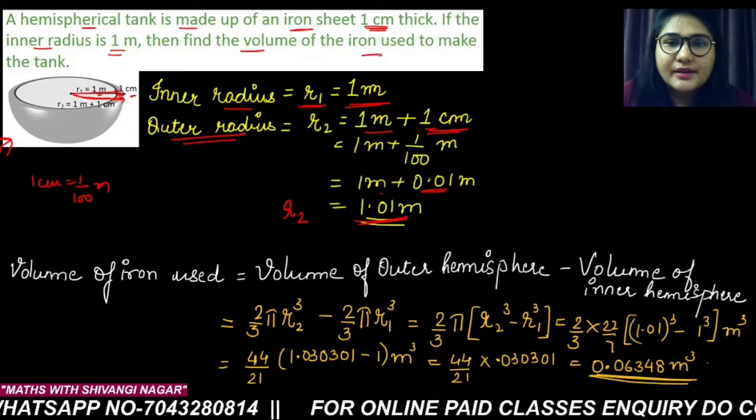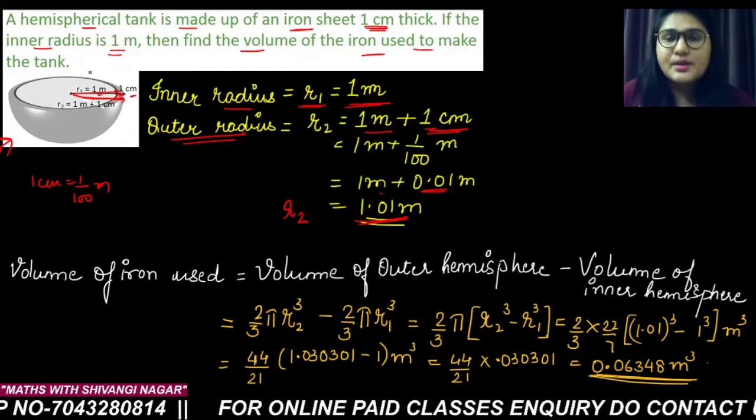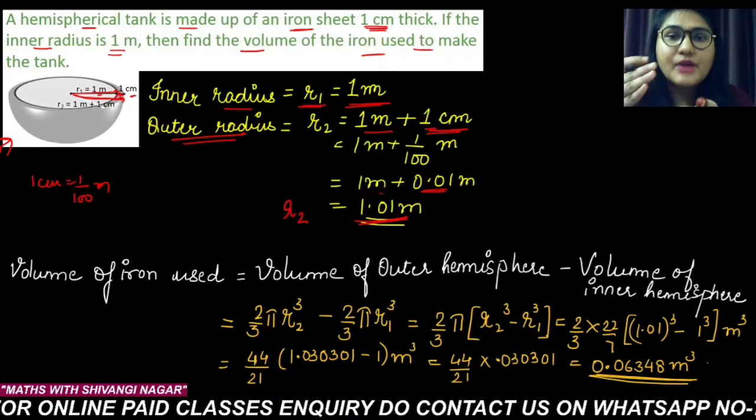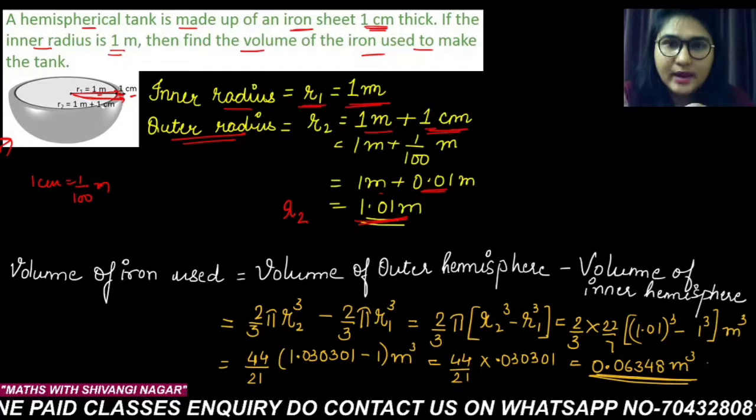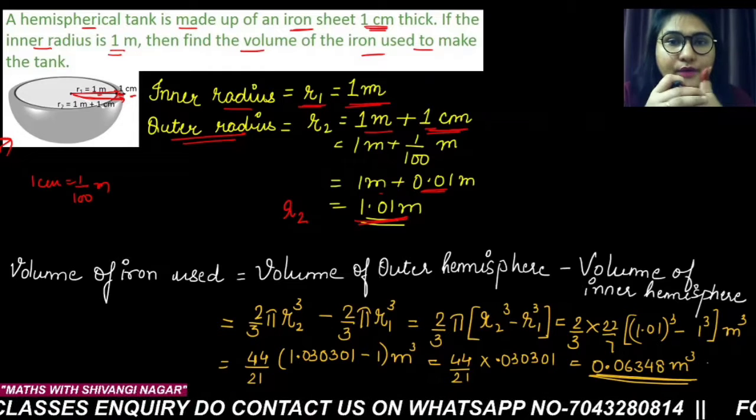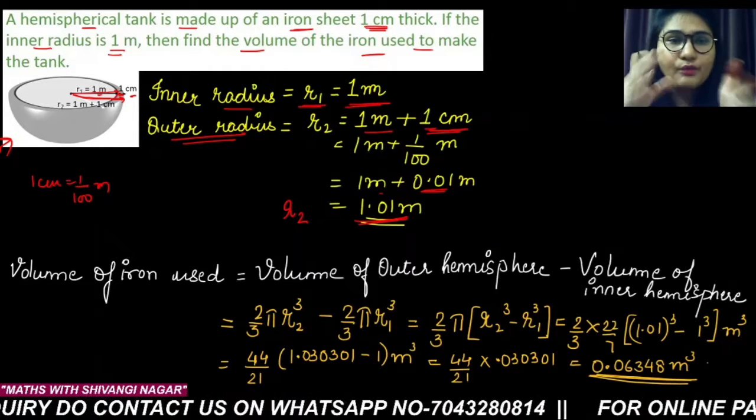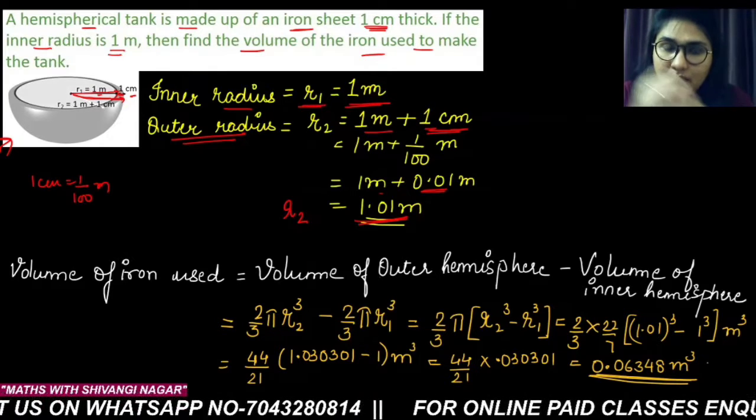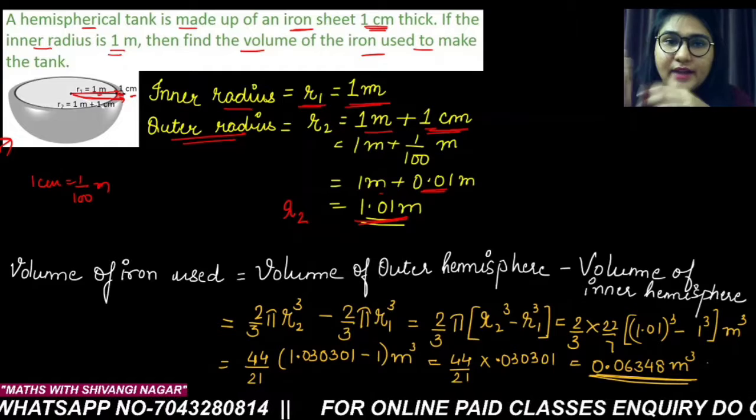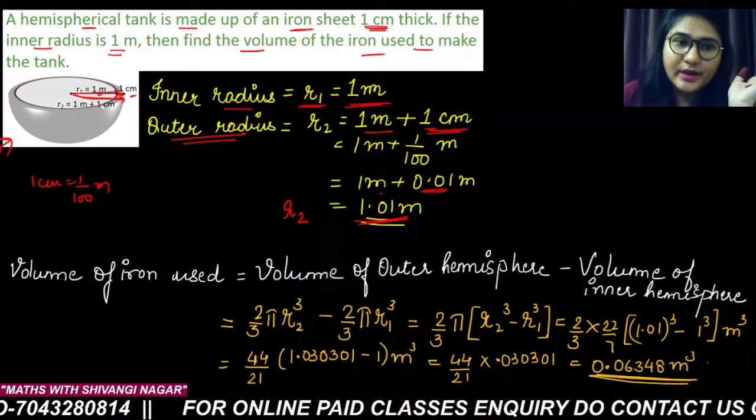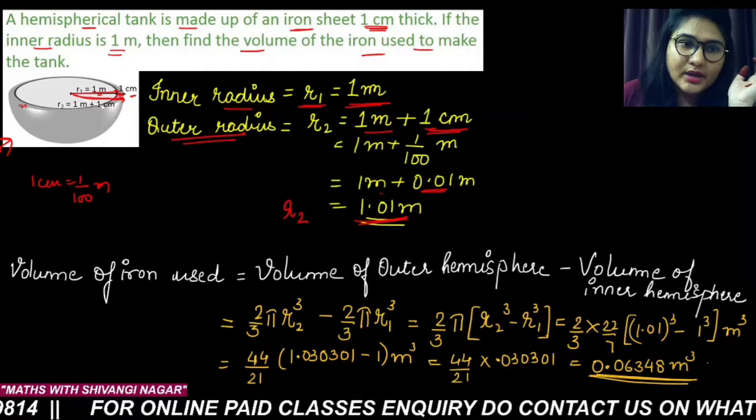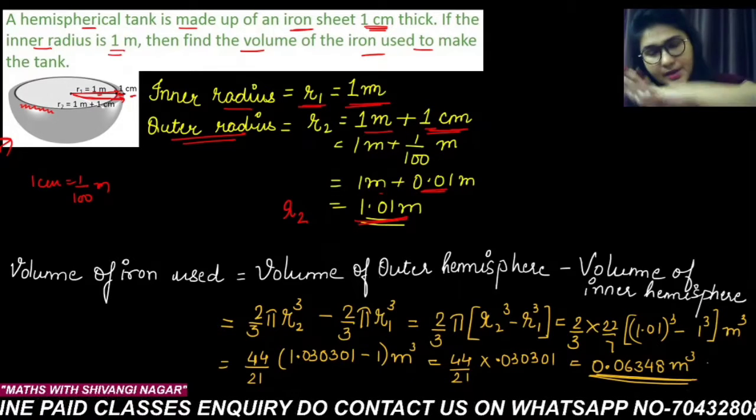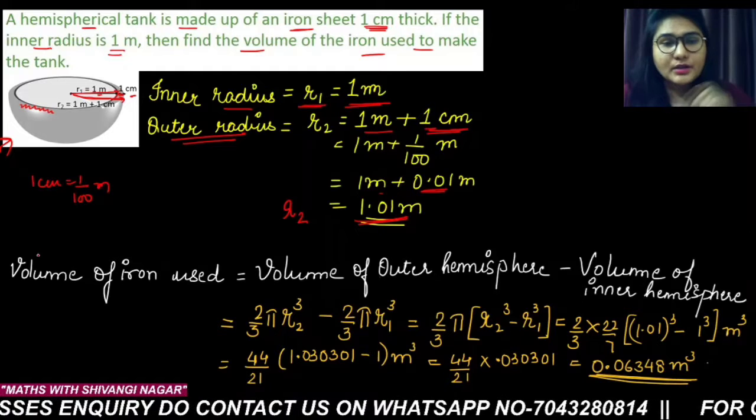Now I have to find out the volume of the iron used to make this tank. That means I have to find out how much amount of iron sheet is used here. Can I say it is equal to the volume of this hemispherical tank? But this sheet is used here, in this part only—the inner part is empty here.